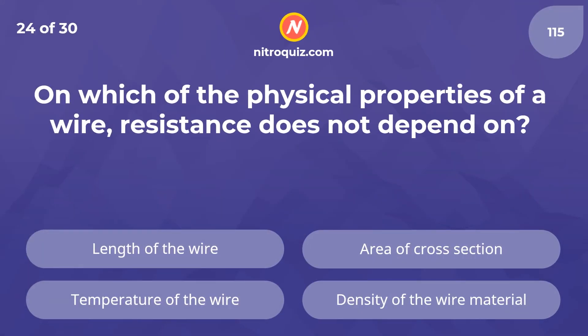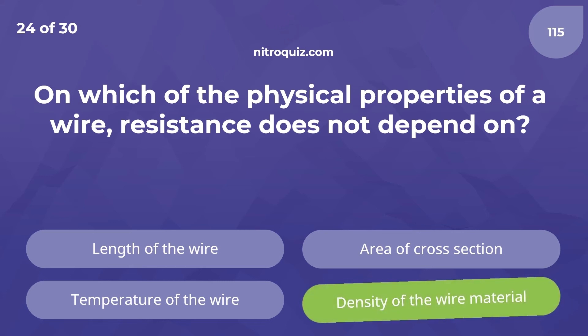On which of the physical properties of a wire does resistance not depend on? Answer is the density of the wire material.